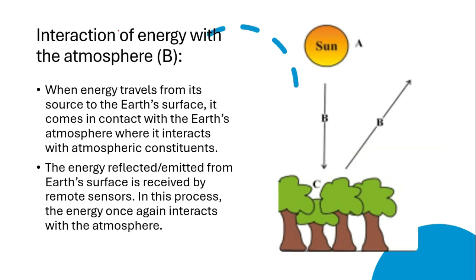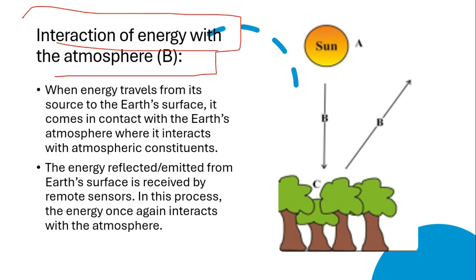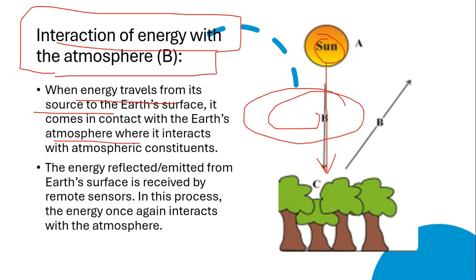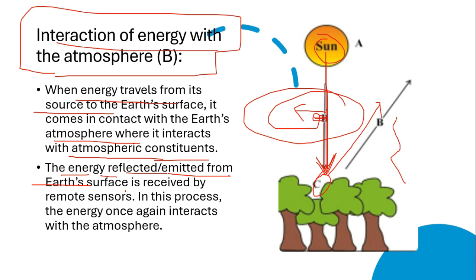The second step is interaction of energy with the atmosphere. When energy travels from its source — the sun — it comes in contact with earth's atmosphere and interacts with atmospheric constituents. After meeting them, the energy reaches earth's surface, where it gets reflected and emitted, and that reflected/emitted energy is captured by the satellite sensor. In this process, the energy once again interacts with the atmosphere while returning back to the sensor.